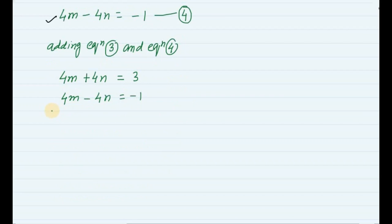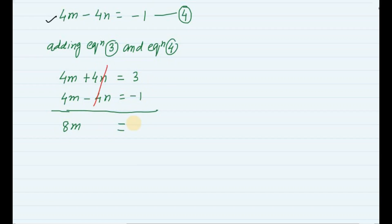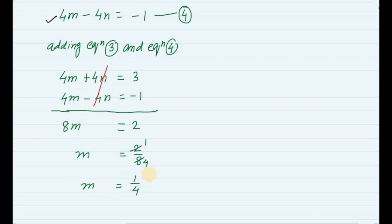Adding them: 4m plus 4m gives 8m. The plus 4n and minus 4n cancel to 0. Then 3 plus minus 1 gives 2. So 8m equals 2, therefore m is equal to 2 upon 8, which simplifies to m is equal to 1 by 4.